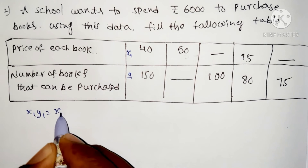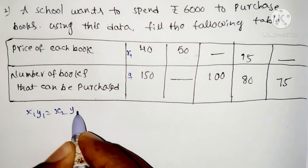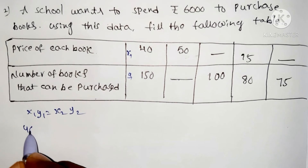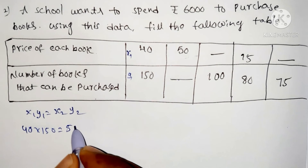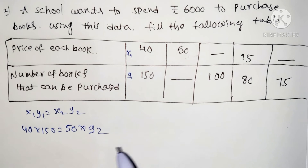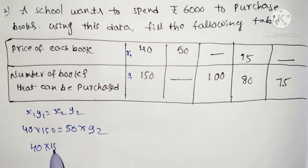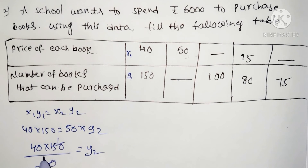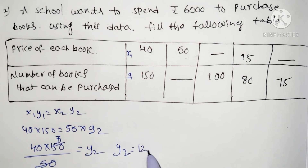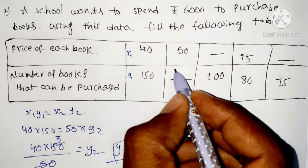Applying the formula x1 y1 = x2 y2. Here x1 is equal to 40, y1 is 50, and x2 is 50. So 40 into 50 is equal to 50 into y2, giving y2 equal to 120. So y2 is 120, and this bracket value is 120.